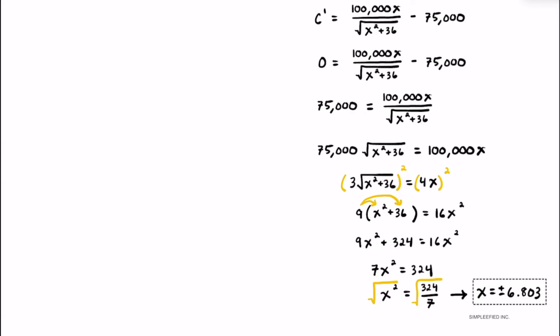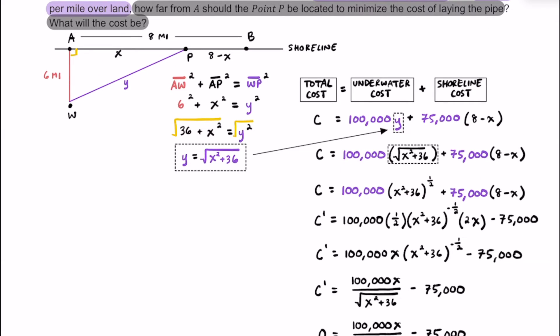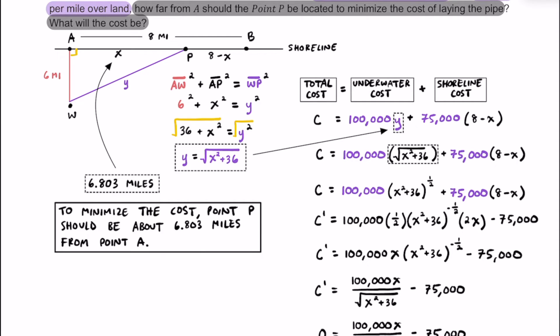These are the two critical points, ±6.803. Since X represents a distance, it cannot be negative, so we use X ≈ 6.803 miles. This means point P should be located approximately 6.803 miles from point A along the shoreline in order to minimize the total cost of laying the pipeline.